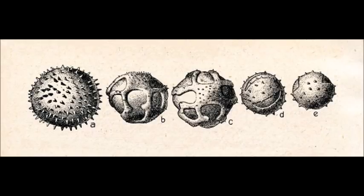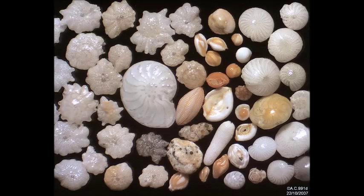Palynology is the study of pollen grains, spores, and other microscopic fossils in connection with archaeology and paleontology. This is to the exclusion of foraminifera, diatoms, and other organisms that create calcium carbonate shells that we discussed in paleoclimatology.